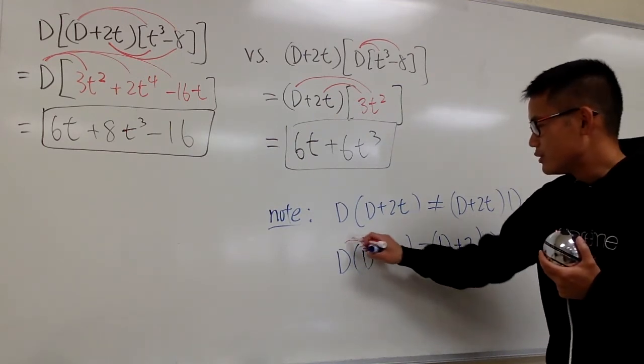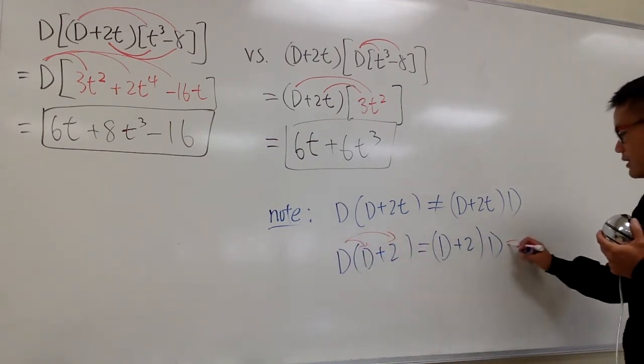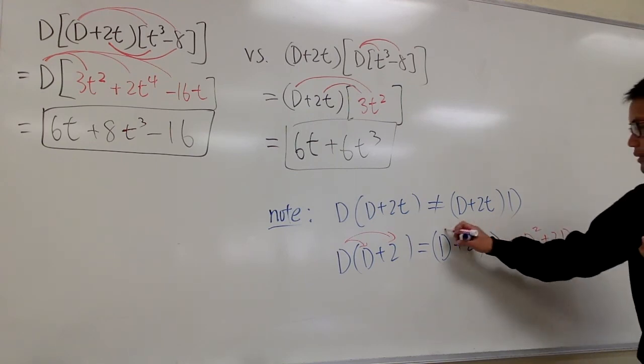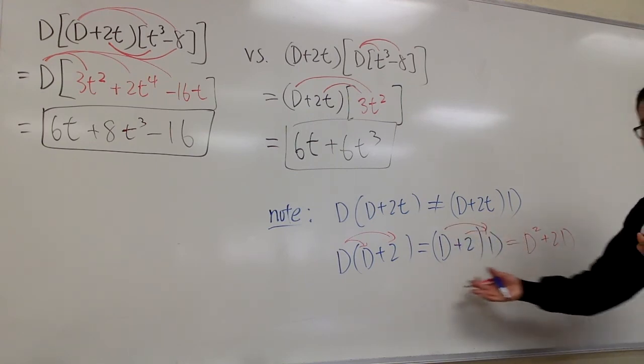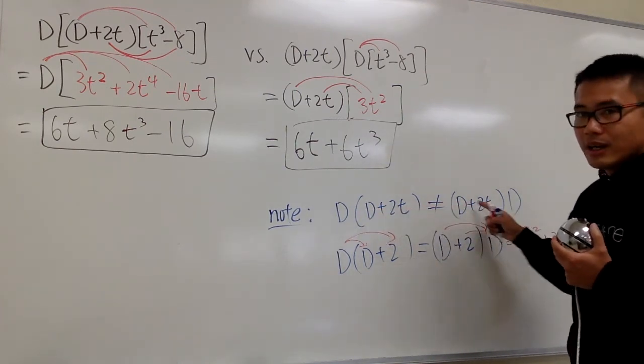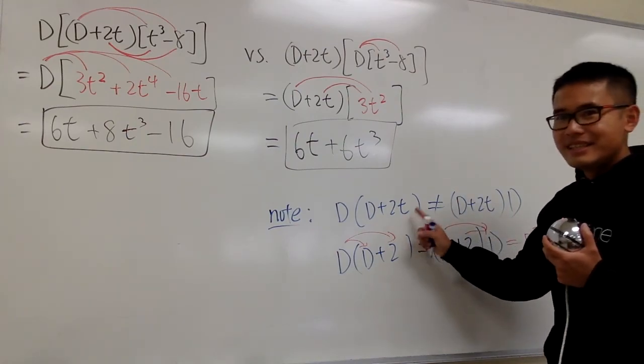In fact, you can just distribute. You can say this equals D squared plus 2D. You can distribute and multiply if you would like. But we cannot do anything like that with the other case because it has the variable.